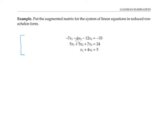So the first equation becomes the row: negative seven, negative six, negative 12, negative 33. The next equation becomes 5, 5, 7, 24. And the last equation becomes one — there's a zero as the coefficient of x2, since x2 doesn't appear in this equation — and then four as the coefficient of x3, and five as the constant term.